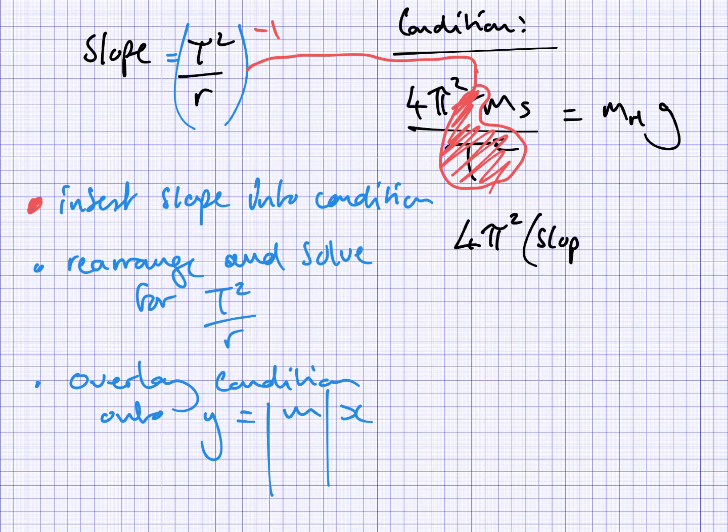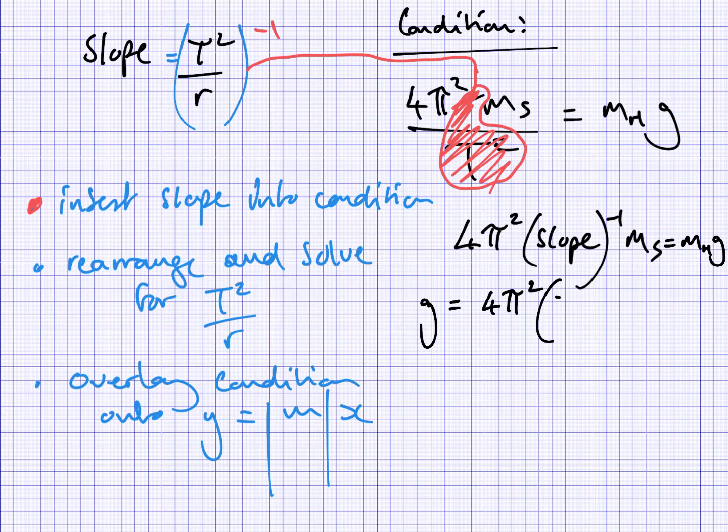So that's going to look like this. It's going to be 4π². And now I put the slope in. But it's the reciprocal of the inverse of that slope. Mass of the stopper. And that is equal to m hanging times gravity. So, of course, the aim of this experiment is to show that gravity is 9.81. So we just rearrange this to solve for g. So, of course, 4π² slope to the negative 1 times the mass of the stopper divided by the mass that's hanging. And that should give you g.